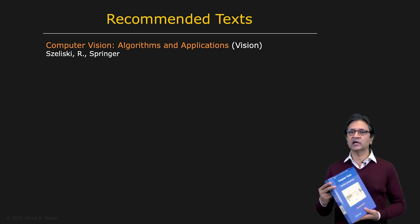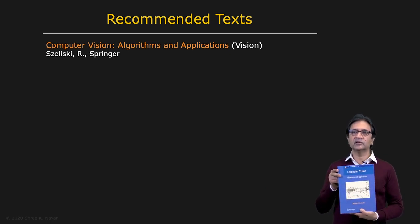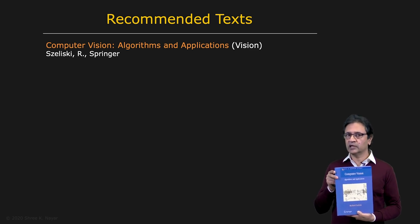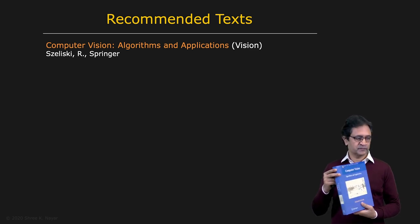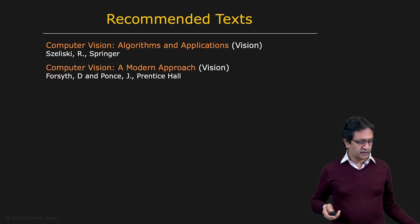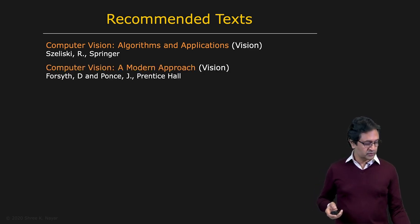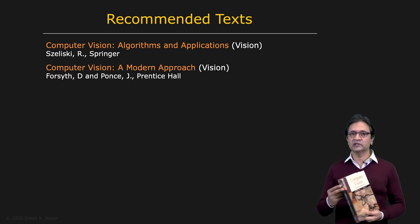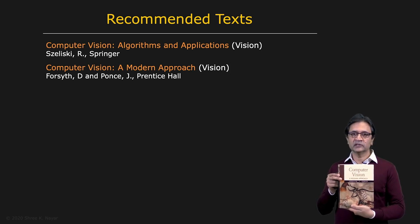The material covered in these lectures comes from varied sources. I have used both published research papers as well as textbooks. I'd like to share with you some of the textbooks that I use. The first one is Computer Vision: Algorithms and Applications by Rick Szeliski. I would say that this book most overlaps with the material that I cover in the lecture series. And then there is Computer Vision: A Modern Approach by Forsyth and Pons, also an excellent book.